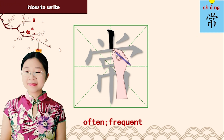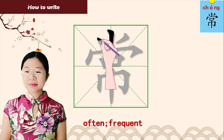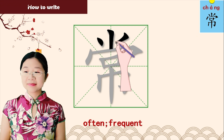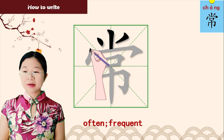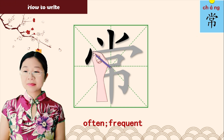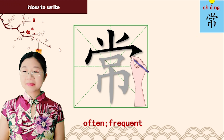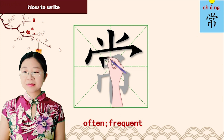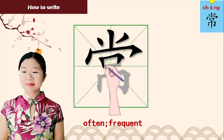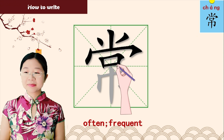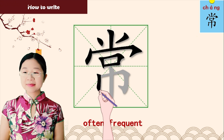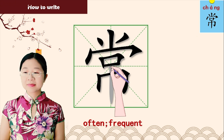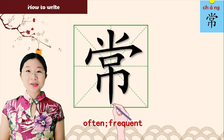One, two, three, four, five, six, seven, eight, nine, ten, eleven. So there are eleven strokes in this character.